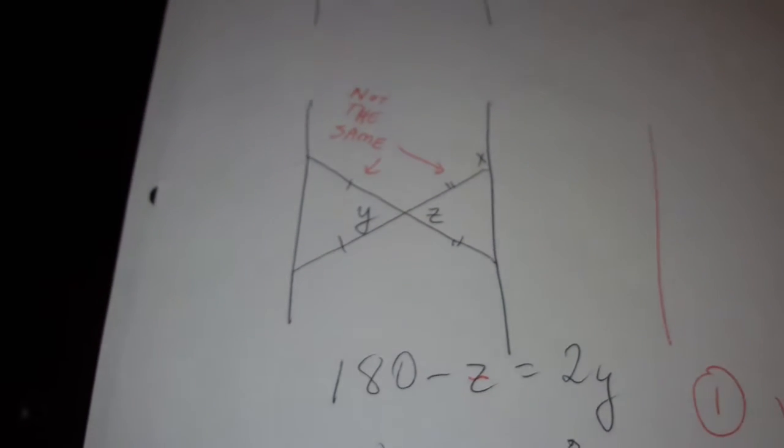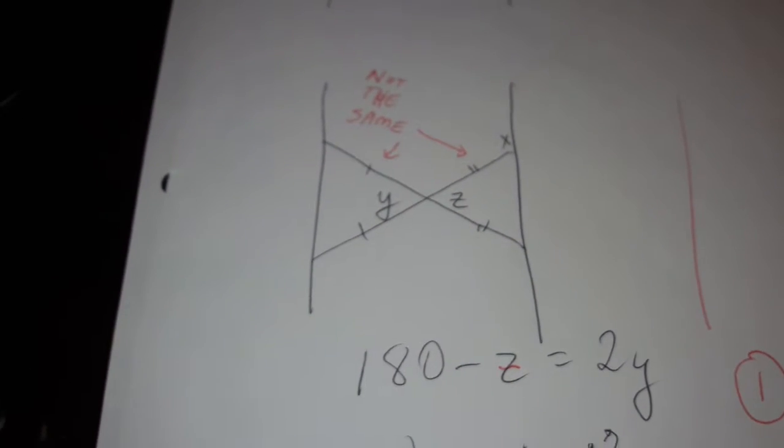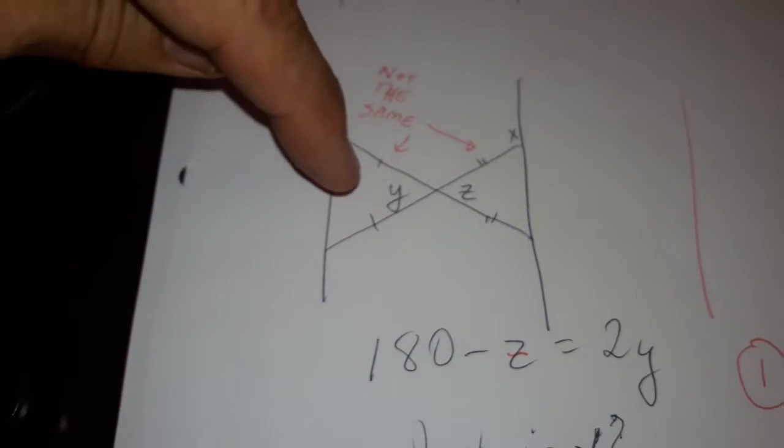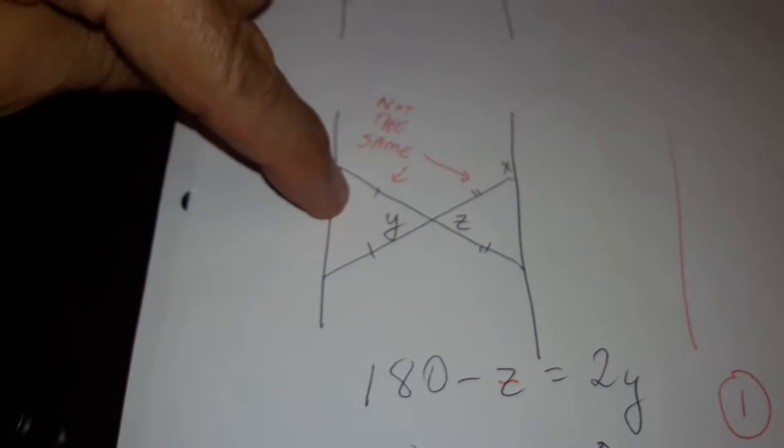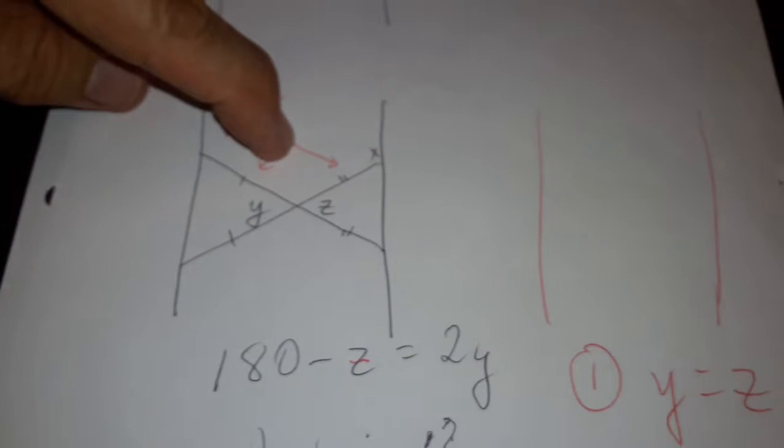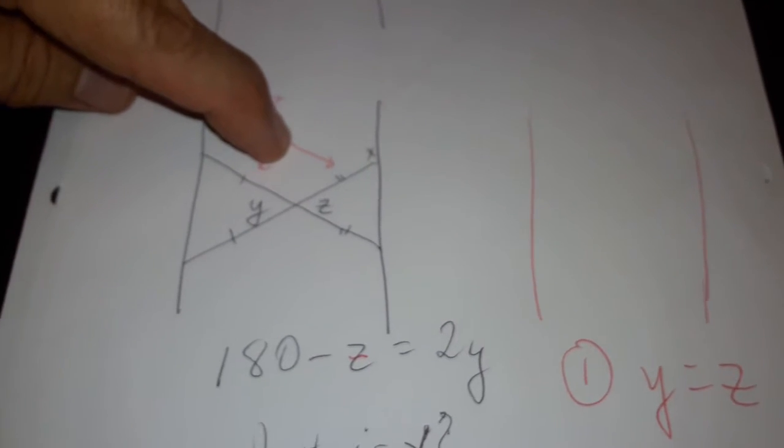They tell us that 180 minus Z equals 2Y. We can learn something from that. But from this picture, we also know that Y equals Z, right?